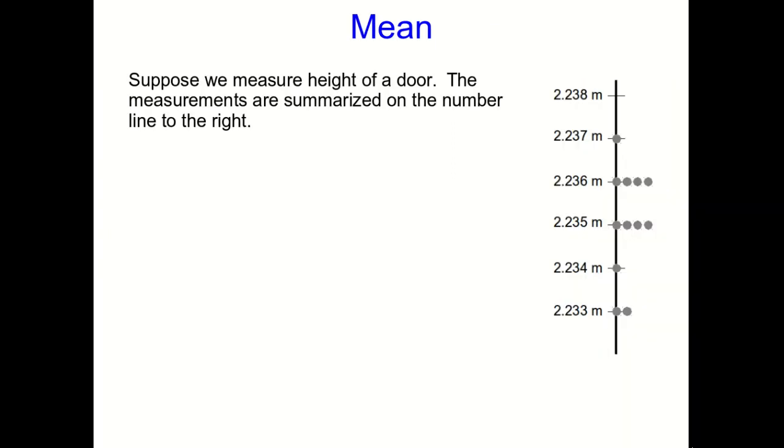So let's continue with this example of measuring the height of a door frame. So on the right side of the screen here are 12 actual measurements that I made with a measuring tape of the height of the door in the physics lab. And you can see I didn't get the same answer quite every time. I got a 2.237 meter measurement and a few of 2.236 and so on. Why?